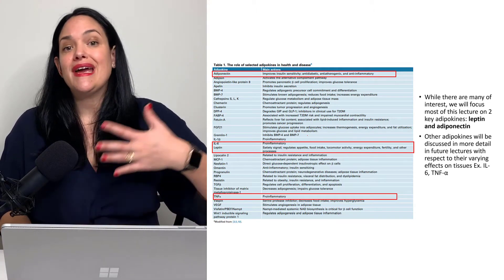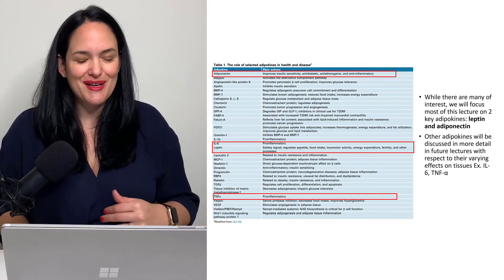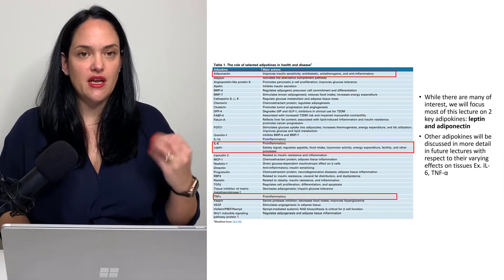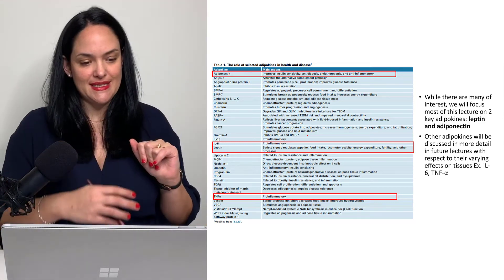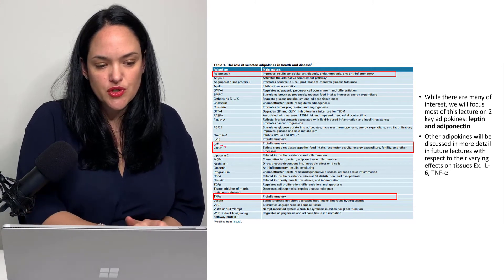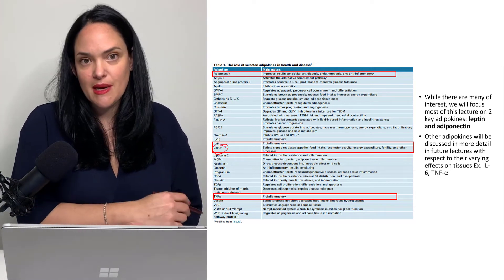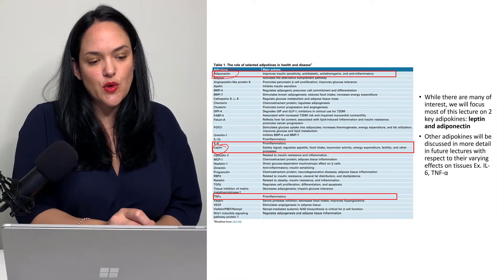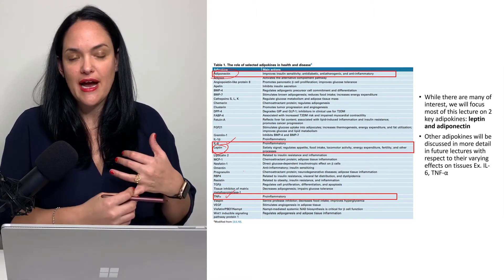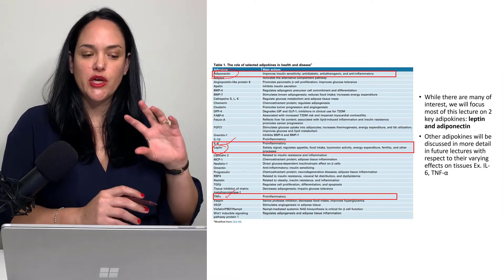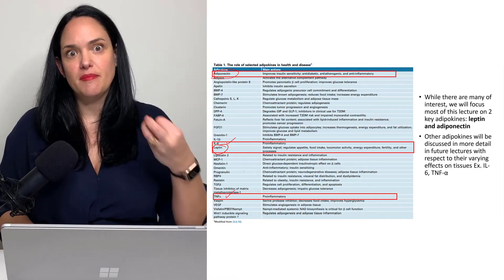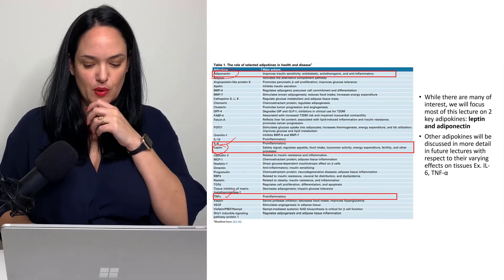There are a number of different adipokines, and we're obviously not going to cover them all. In this unit, we're going to focus on the big ones. We're going to spend quite a bit of time on leptin and adiponectin. We are also going to cover interleukin-6 and tumor necrosis factor alpha, which are two more inflammation-promoting adipokines.